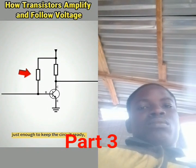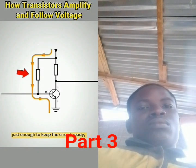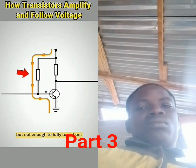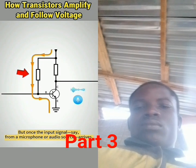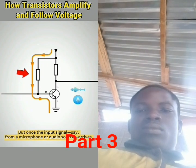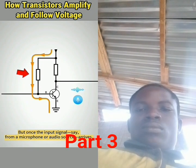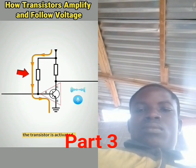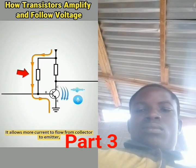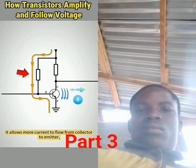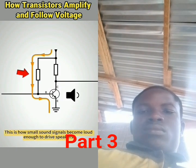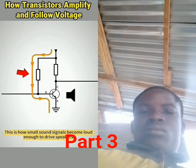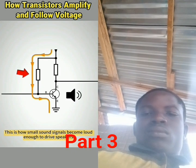Microamps went idle — just enough to keep the circuit ready, but not enough to fully turn it on. But once the input signal, say from a microphone or audio source, arrives, the transistor is activated. It allows more current to flow from collector to emitter, thereby amplifying the audio signal. This is how small sound signals become loud enough to drive speakers.